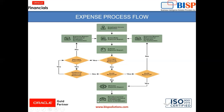The last scenario is when both manager and auditor approval is required for the expense report submitted. First the employee will incur the expense, enter the expense report, and submit it. If manager approval is required and manager approval is received, then it goes to auditor approval. It depends upon the auditor whether the auditor is approving or not.